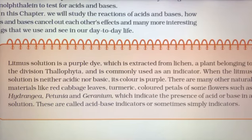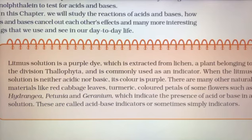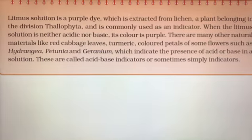There are many other natural materials like red cabbage leaves, turmeric, and coloured petals of some flowers such as hydrangea, petunia and geranium, which indicate the presence of acid or base in a solution। इन सब को हम acid-base indicators, या simply indicators कहते हैं।